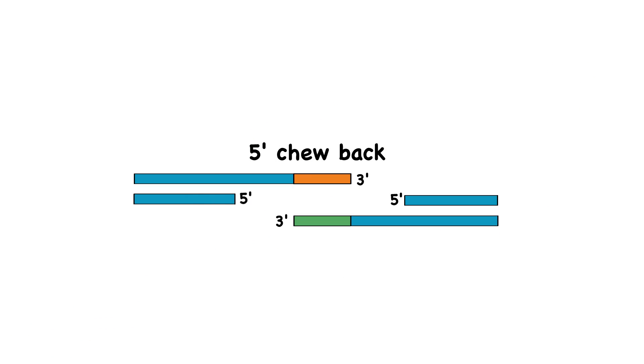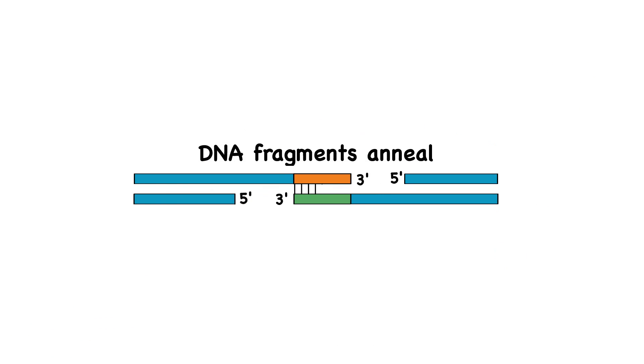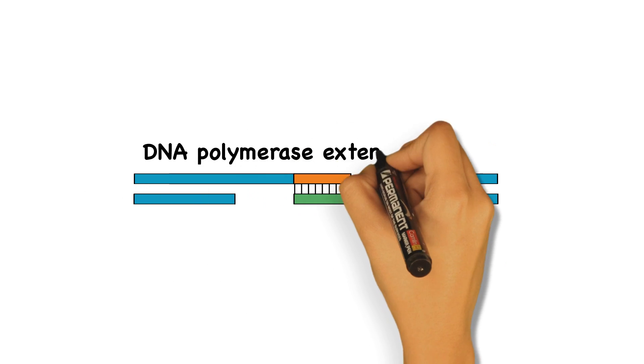In the tube, five prime ends are chewed back. The homologous DNA fragments anneal, and the polymerase extends the three prime ends. DNA nicks are repaired, and in an hour, you get fully assembled DNA.